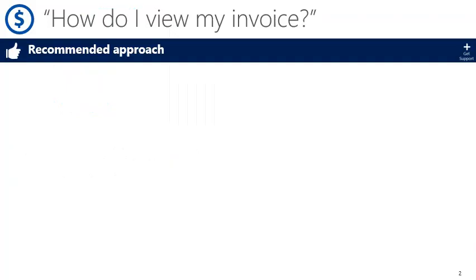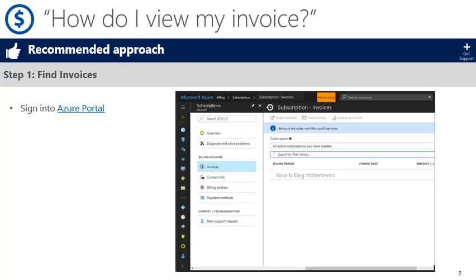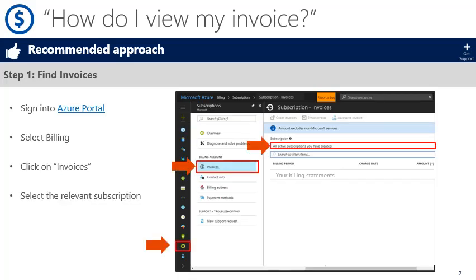Step one is to find invoices in the Azure portal. To do this you'll want to sign into the Azure portal, select the billing icon on the very left of the portal, click on invoices, and then select the subscription that you're interested in from the drop down menu.